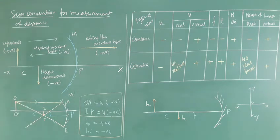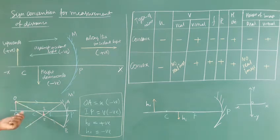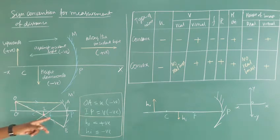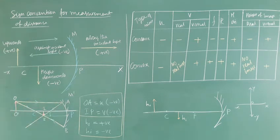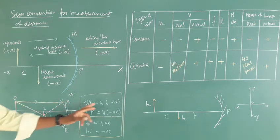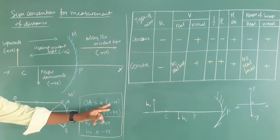We discussed a case in the previous class — the image formed by a concave mirror when the object is placed beyond the center of curvature. The image is formed between the center of curvature and the focus. The object distance is u — that is OA. Since the object is on the left-hand side, it is on the negative x axis, so u is negative.